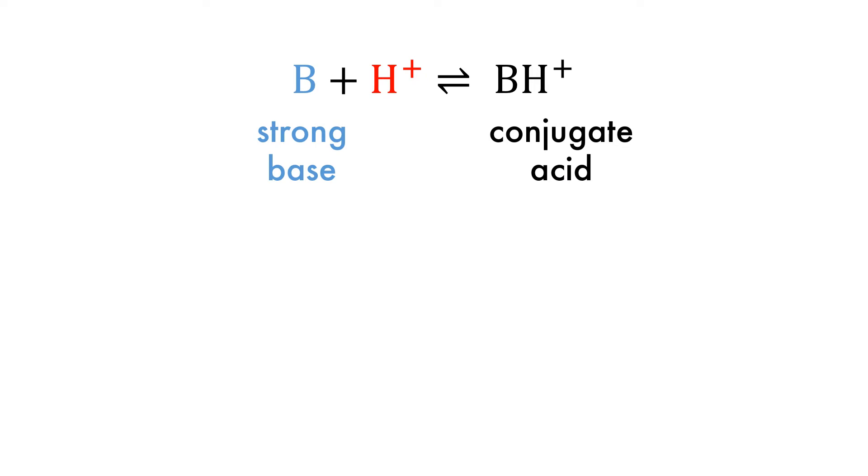Base strength is determined in a similar manner. A strong base easily accepts a proton and is a weak conjugate acid that is stable and does not easily release the proton. A weak base, conversely, does not easily accept a proton.